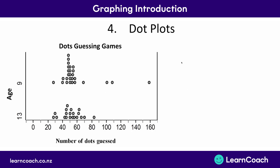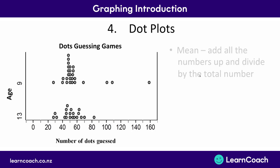Before moving on to the fifth graph type, let's cover the three types of average, because on average people guess around 50. The first type is the mean — your most common type of average. This is when you add up all the guesses together and divide by how many numbers there are. In this case, I add guesses such as 25, 50, etc., and divide by the total 30 guesses. The mean guess for 9-year-olds was 57.8, whereas the mean for 13-year-olds was 51.8.